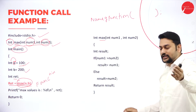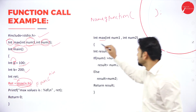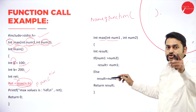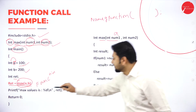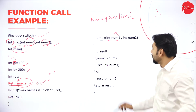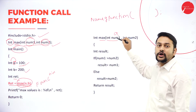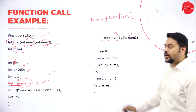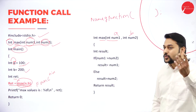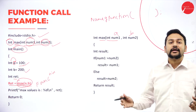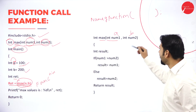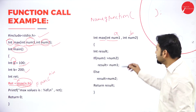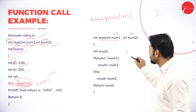Automatically, the control comes to the function definition. I have int num1 and int num2 as parameters. Whatever value I'm passing for 'a' will be copied to num1, and whatever I'm passing for 'b' will be copied to num2. The value of a is 100 and the value of b is 200. Inside the function, I am finding the biggest of the two numbers. The return type is int, meaning this function returns some value.